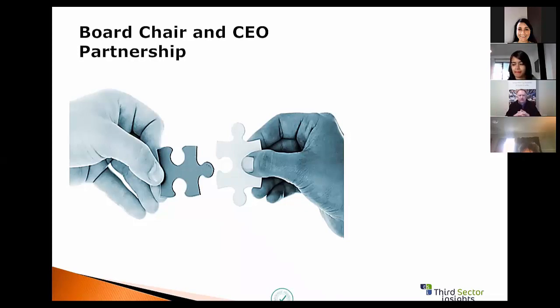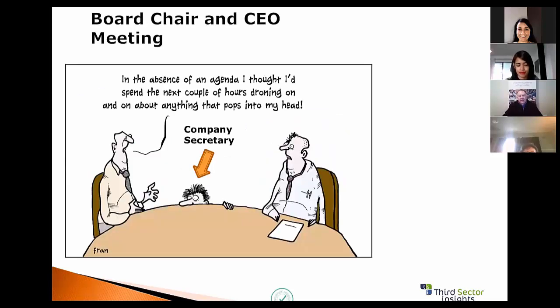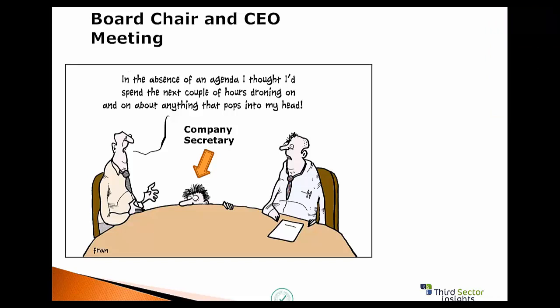They've got to fit together and work together — that doesn't mean they have to be exactly the same types of people. I hope this isn't your organizations when the CEO and board chair get together: in the absence of an agenda, just spending hours talking about anything that pops into mind. Many organizations have a very loose structure, and that's fine to a certain extent, but there's got to be structure in this relationship and how we engage.